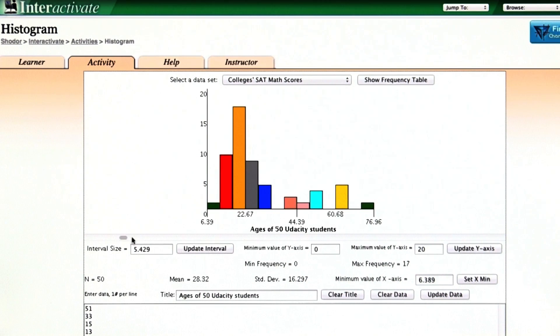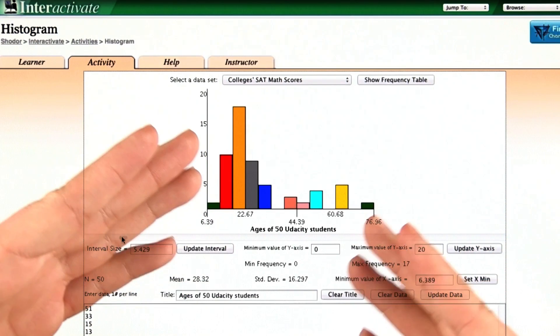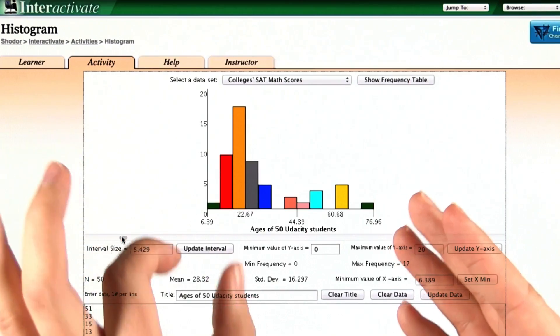The link to this software is on the right. So you can click on it and input the data. We shared this data with you in a Google spreadsheet. And then you can see for yourself how the shape of the histogram changes when you change the bin size.